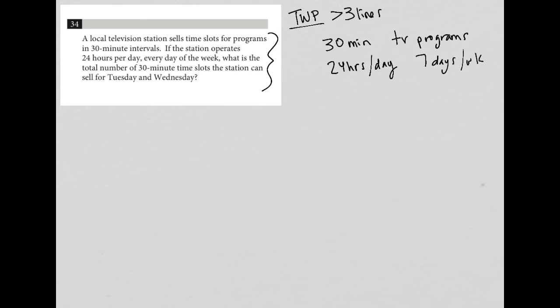What is the total number of 30 minute time slots? So total number of slots. The station can sell for Tuesday and Wednesday. Alright. So total number of slots, Tuesday and Wednesday. So really just two days.